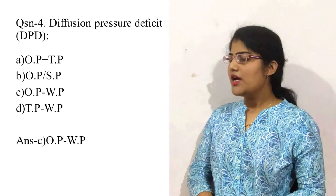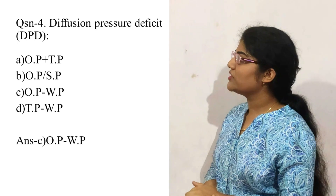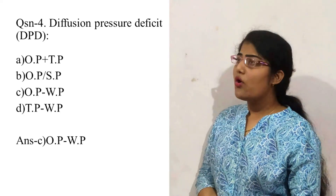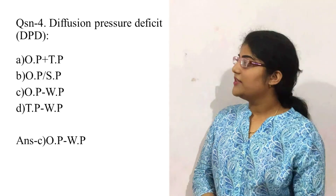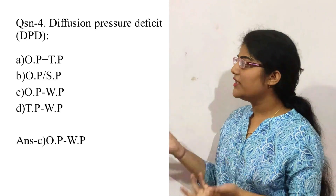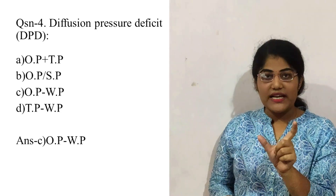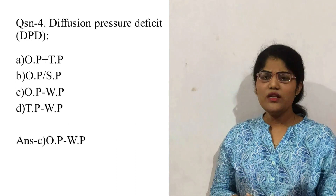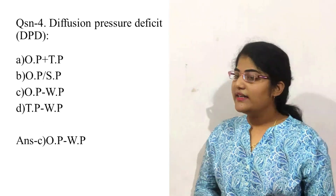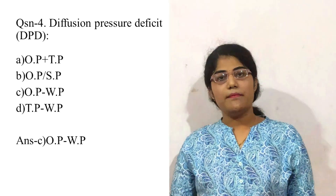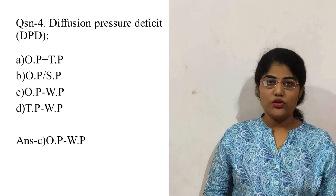Question number four is about the DPD formula. Option A is OP plus TP, option B is OP divided by SP, option C is OP minus WP, and option D is TP minus WP. Options A and B are wrong because the definition of DPD contains the word 'difference', meaning subtraction. Option C, OP minus WP, matches our equation, so option C is the correct answer.